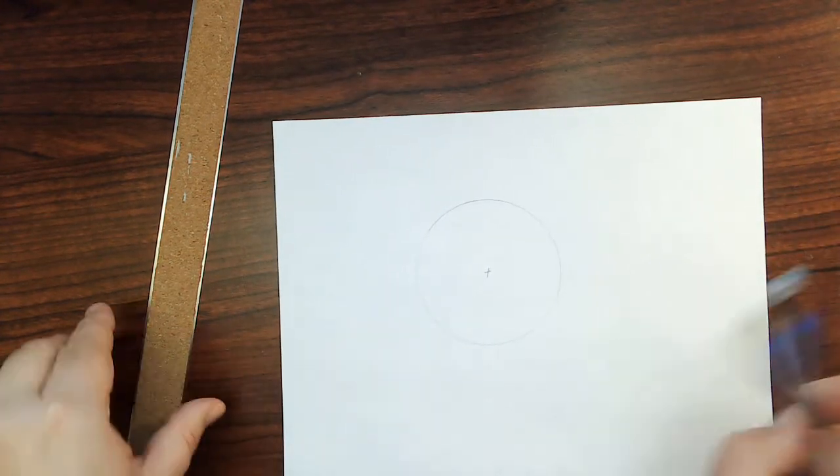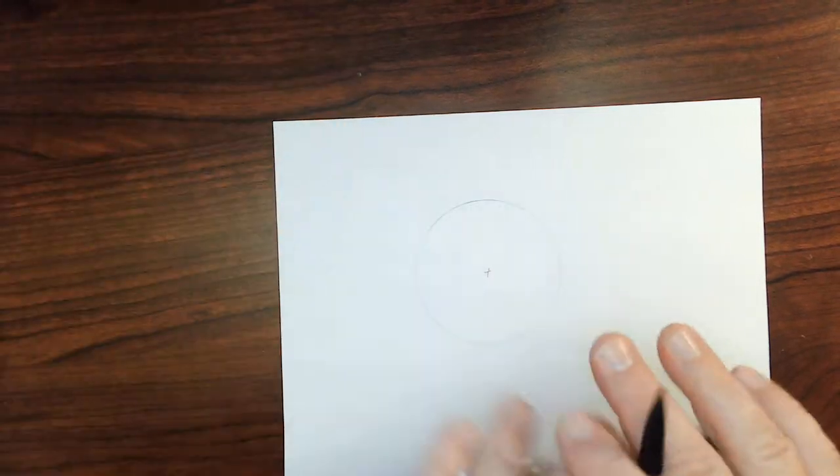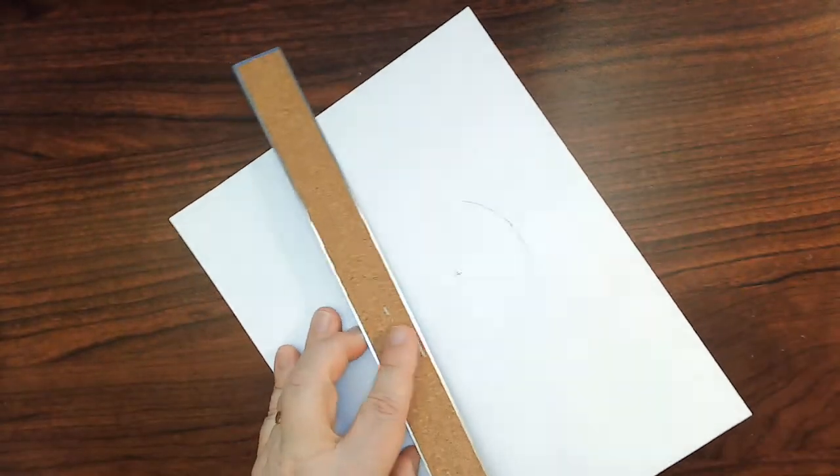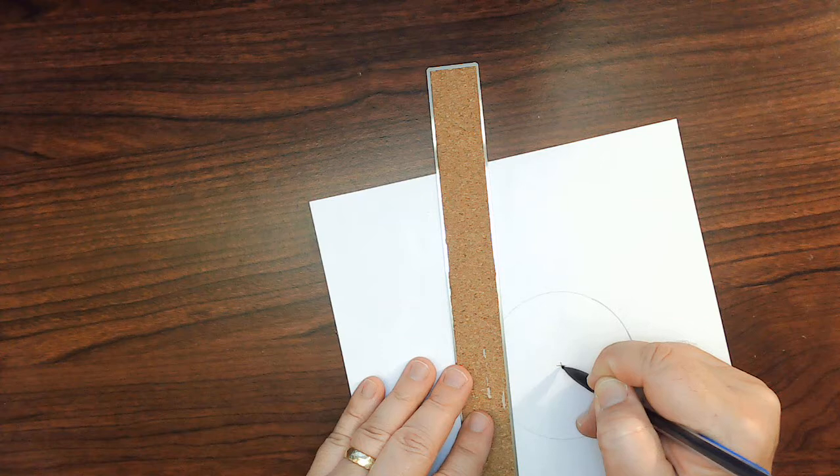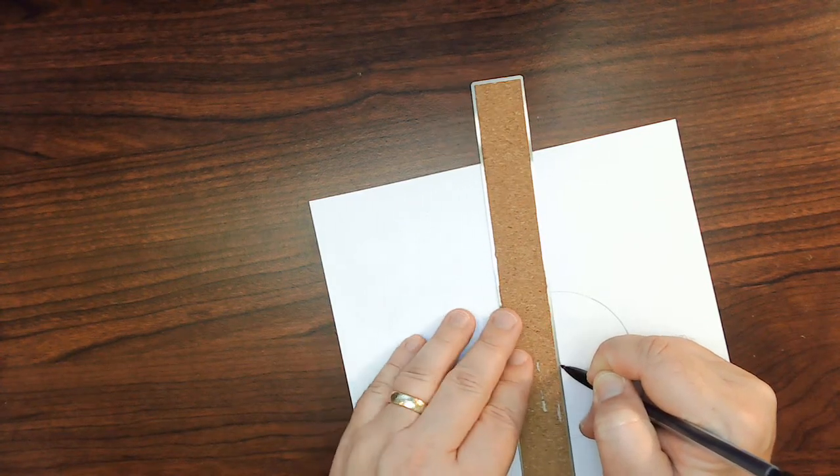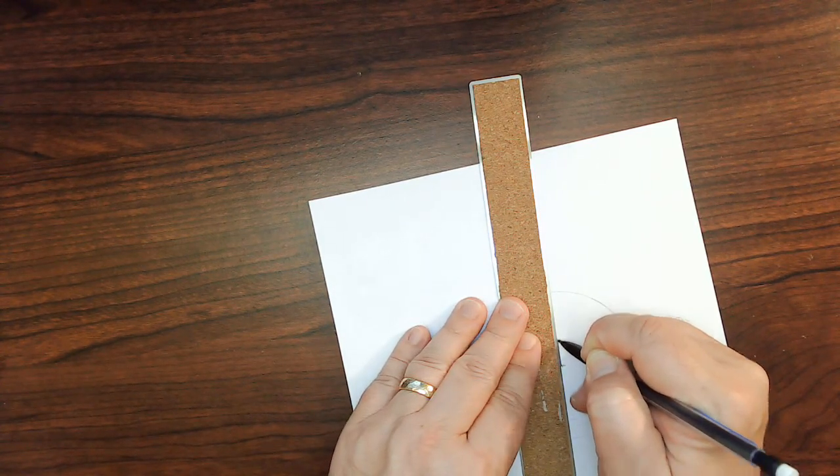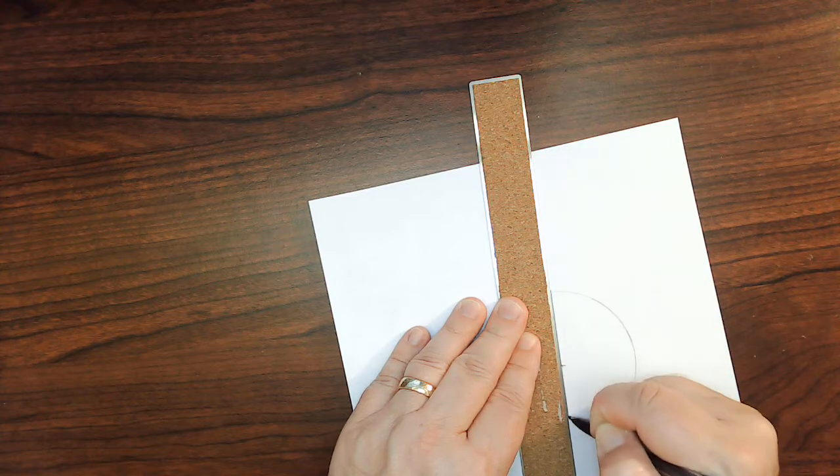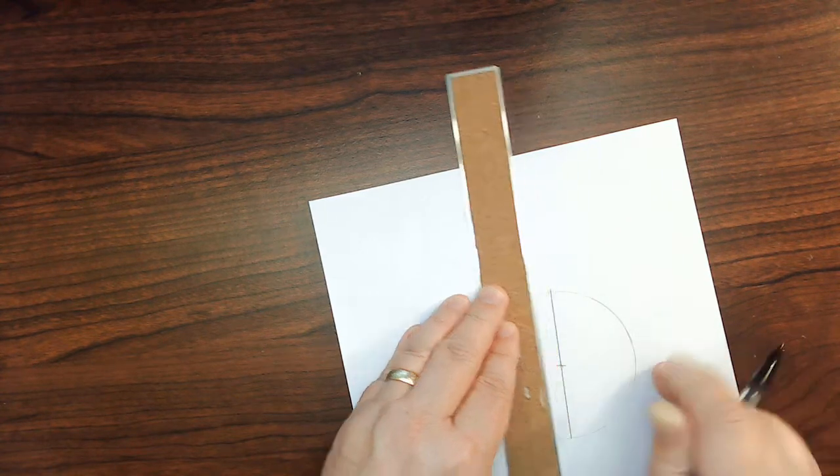I'm going to then pull out the straight edge. With the straight edge, I'm going to put the pencil right on the center point, bring the straight edge up to the center point. There it is.